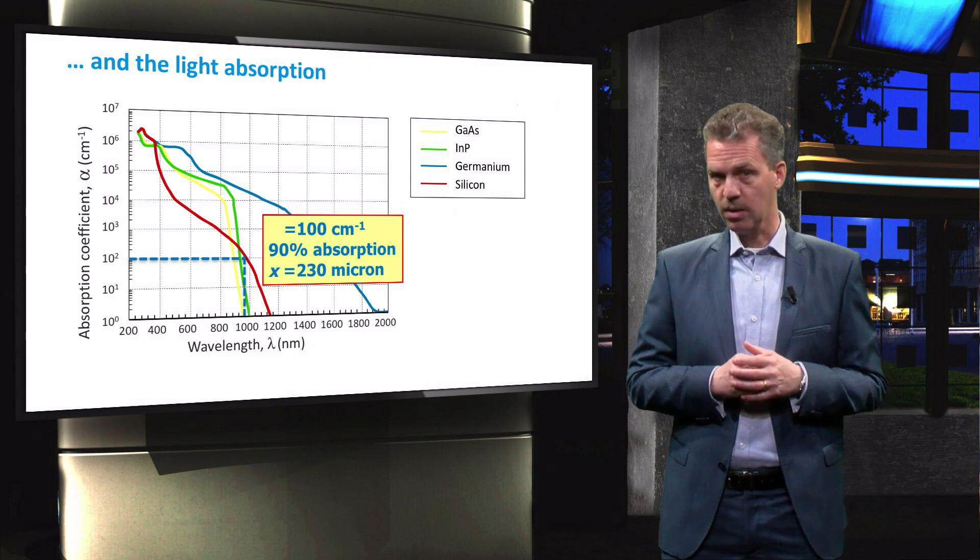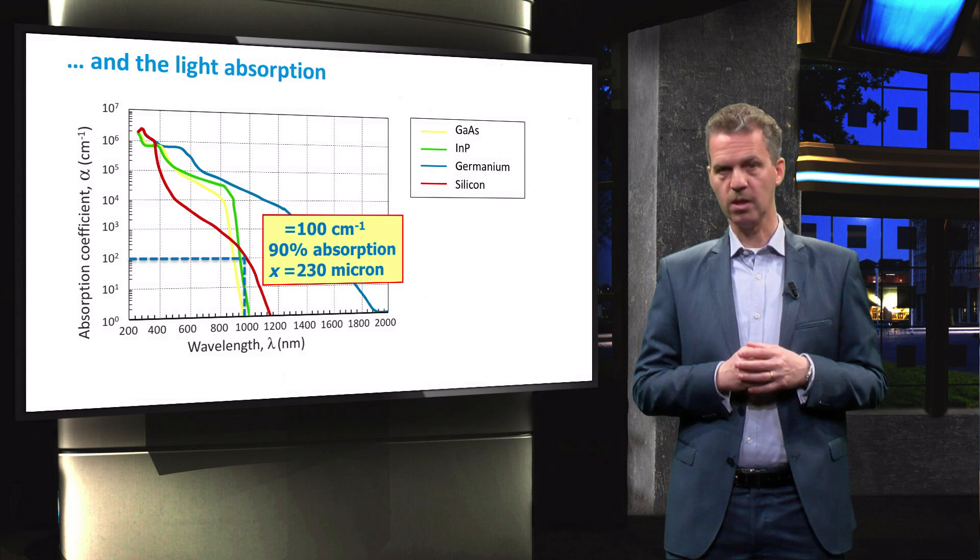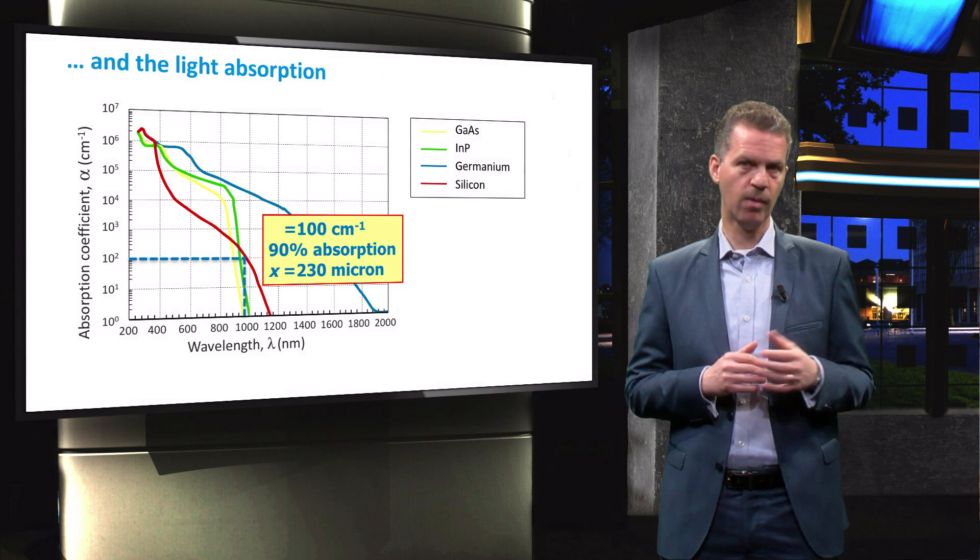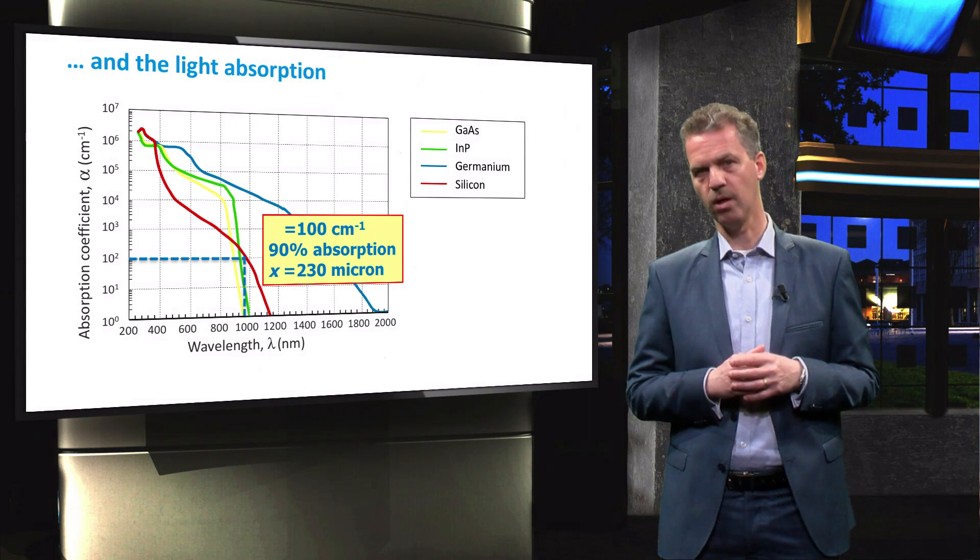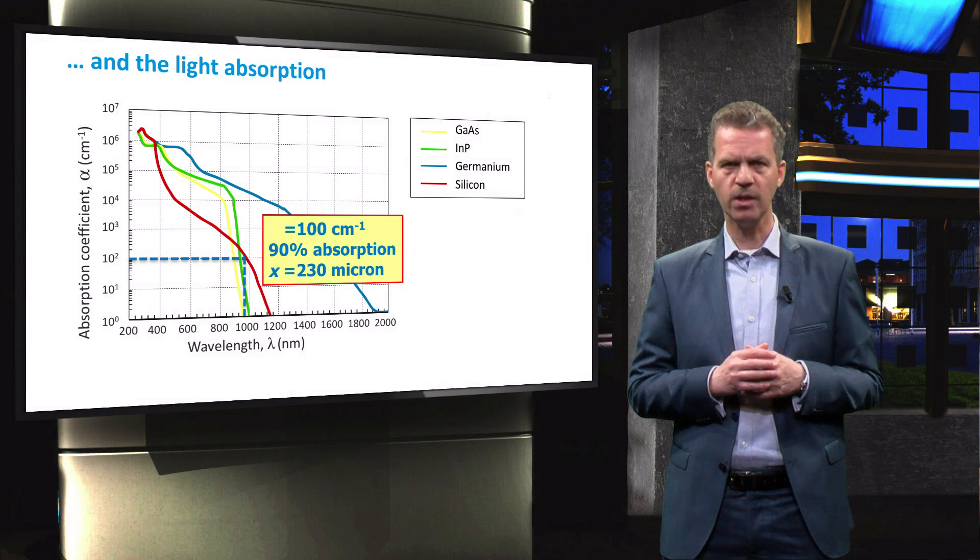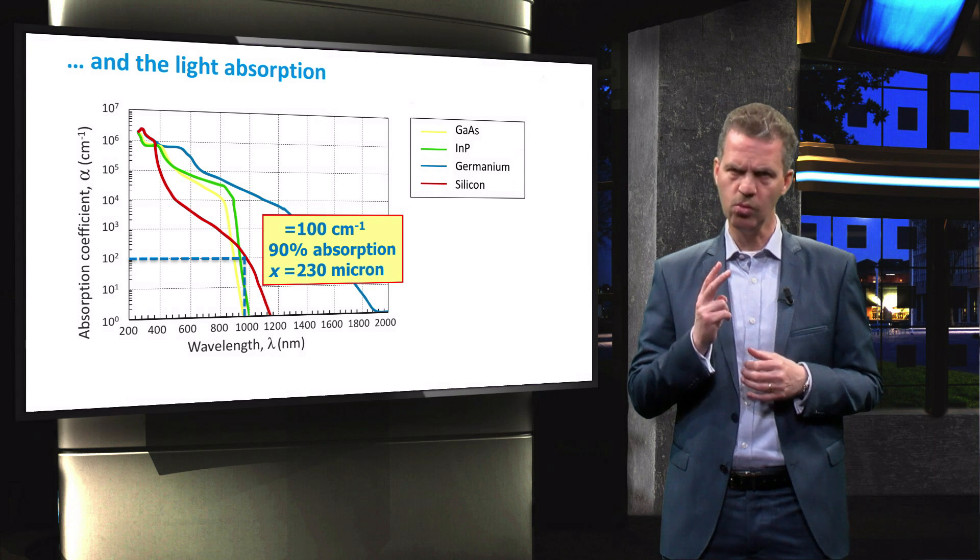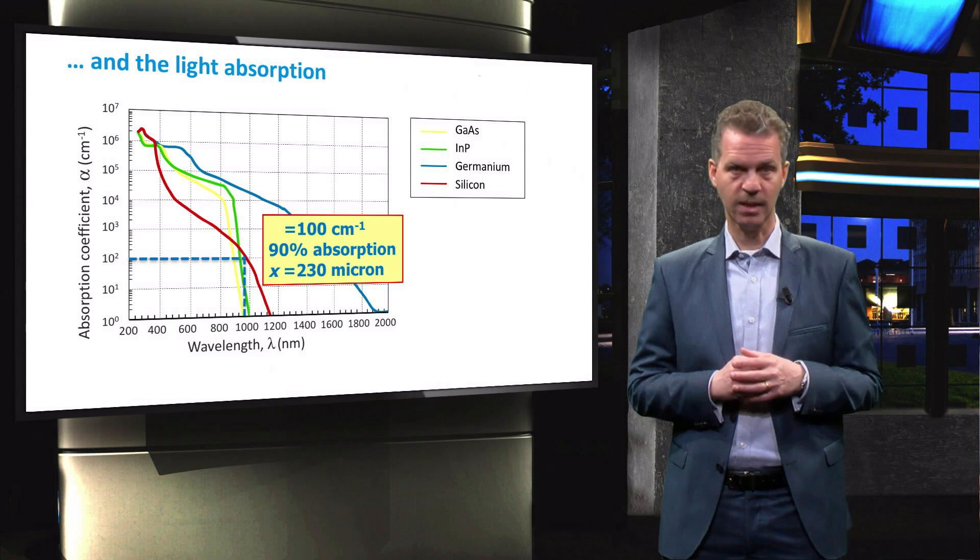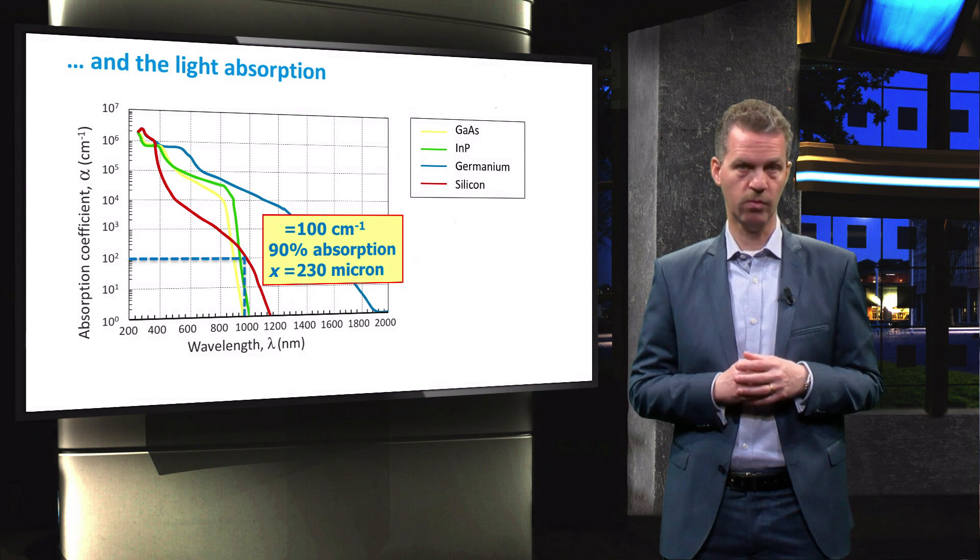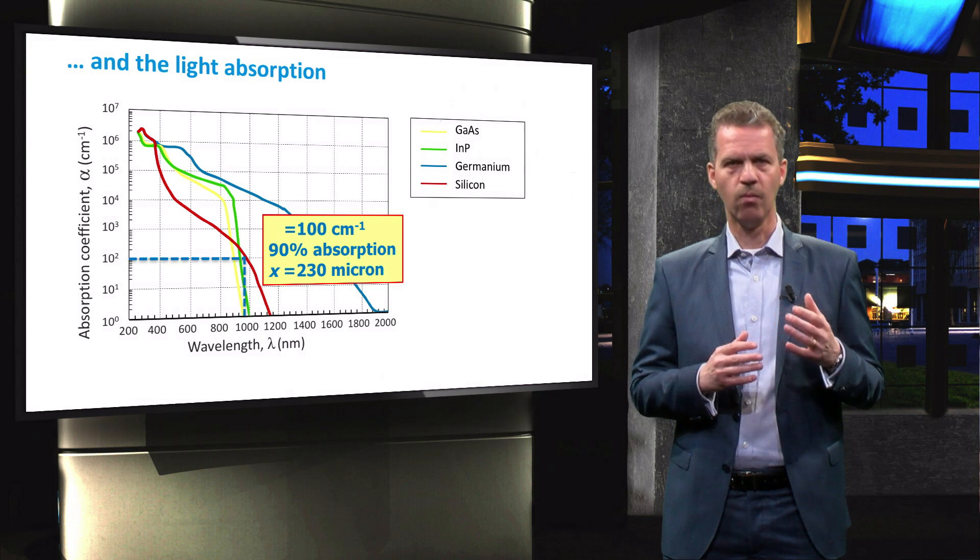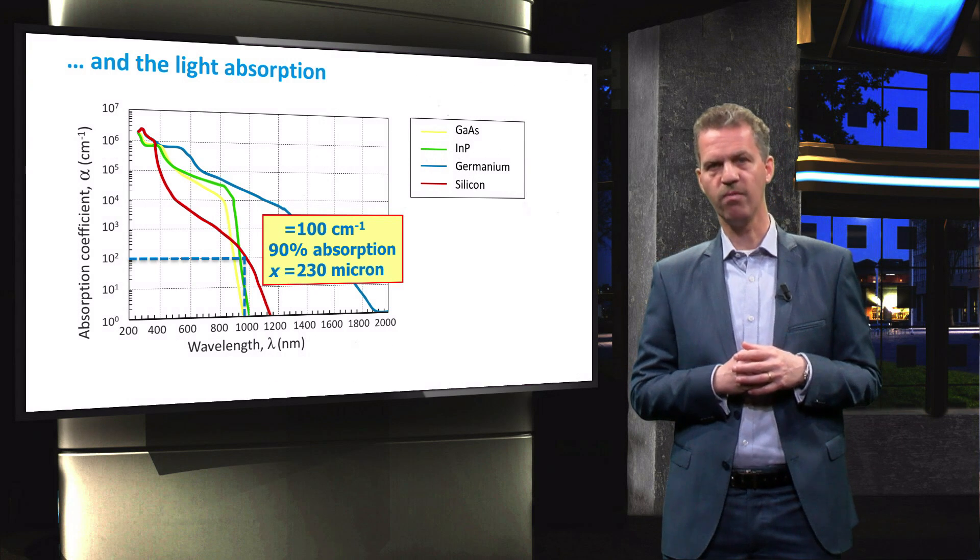When we compare the wavelength-dependent absorption coefficient of crystalline silicon to direct band gap materials such as gallium arsenide, indium phosphide and germanium, we can clearly see that the absorption coefficient of silicon is up to two orders of magnitude smaller, up to the direct band gap of 3.4 eV. This corresponds to a wavelength of 365 nm.